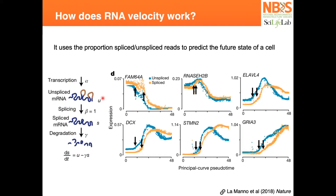The idea is to compare how much unspliced RNA you have in a cell versus the spliced version of that same RNA. The difference in the spliced version will be the unspliced RNA versus the degradation of the spliced one.